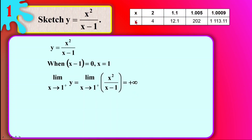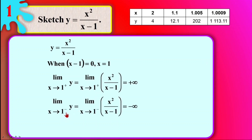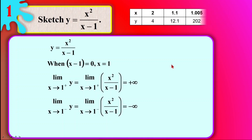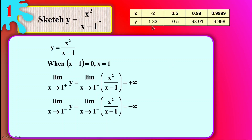Now if I have x coming from the left-hand side of 1, the numbers are smaller than 1. If I take any number smaller than 1 and minus 1, I get a negative number at the bottom, but the top remains positive. So positive divided by negative gives a negative result. If you plot it into a table, you'll find the numbers get lesser and lesser and go negative. We call this the vertical asymptote — remember, the vertical asymptote comes from the denominator.